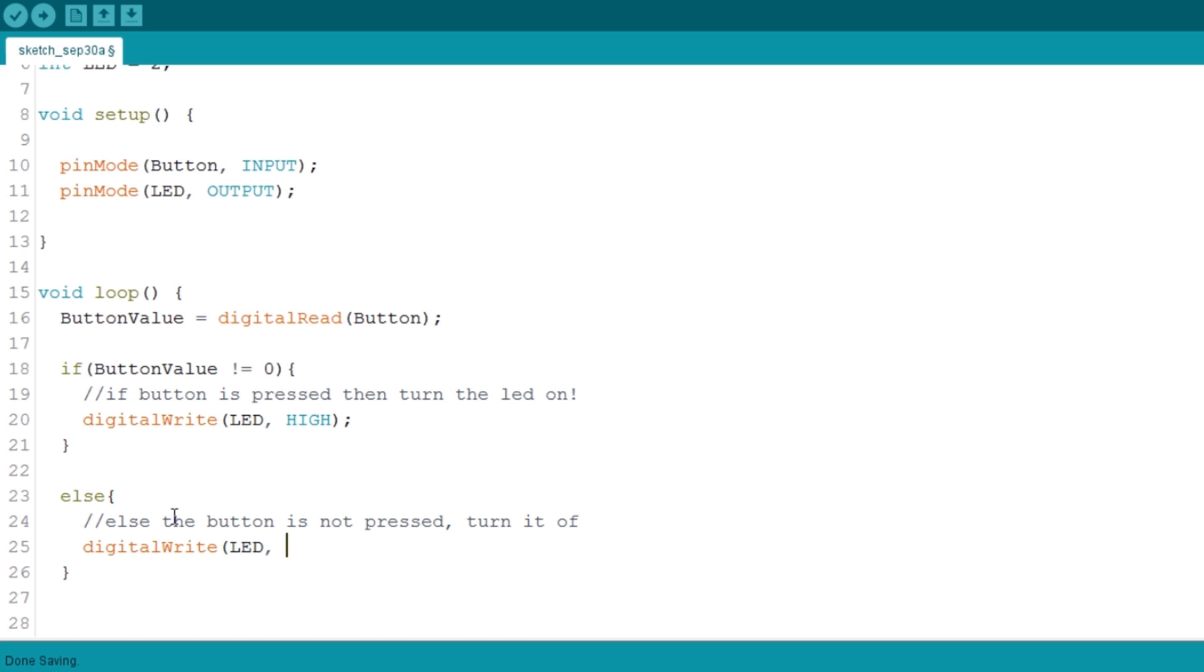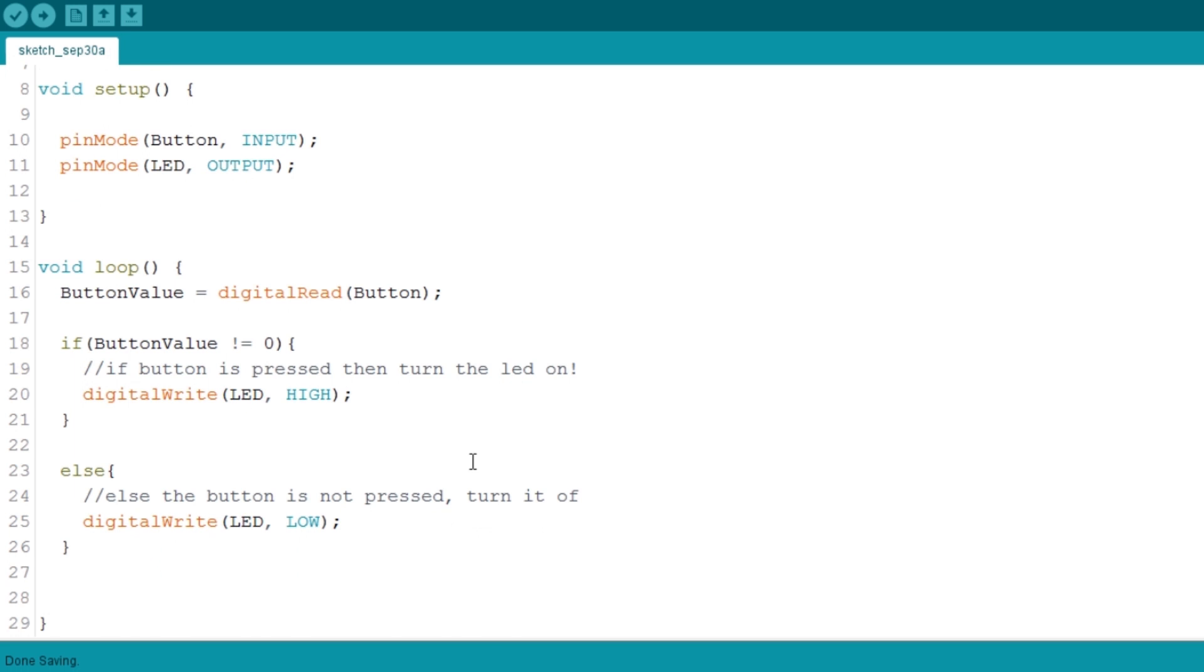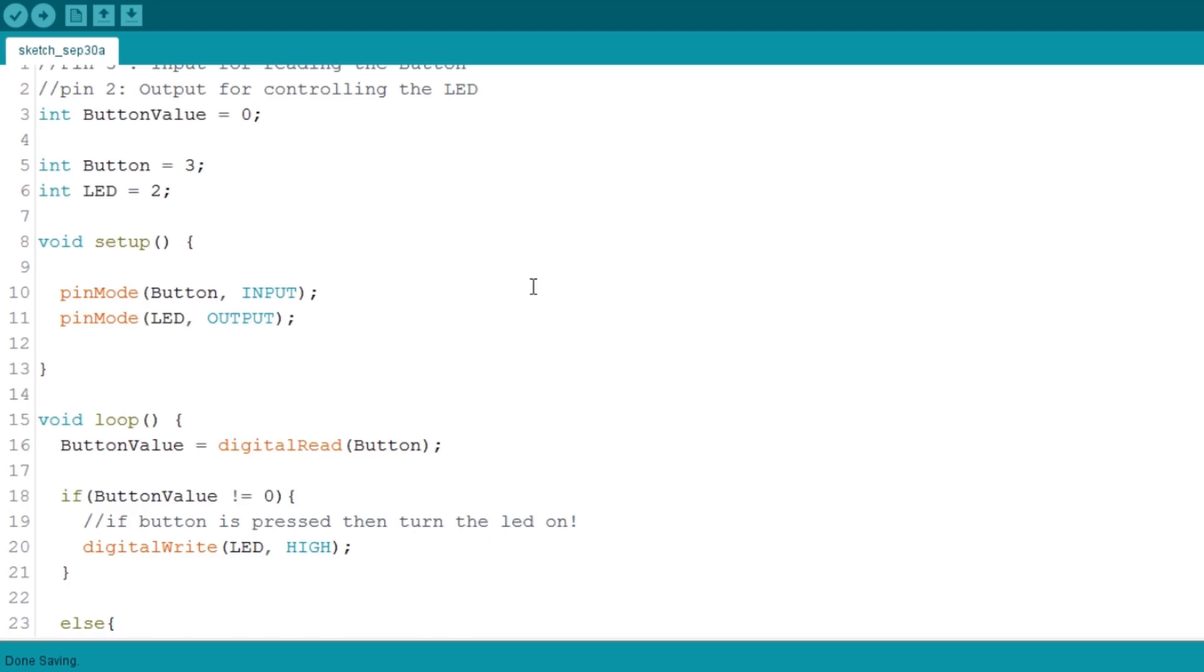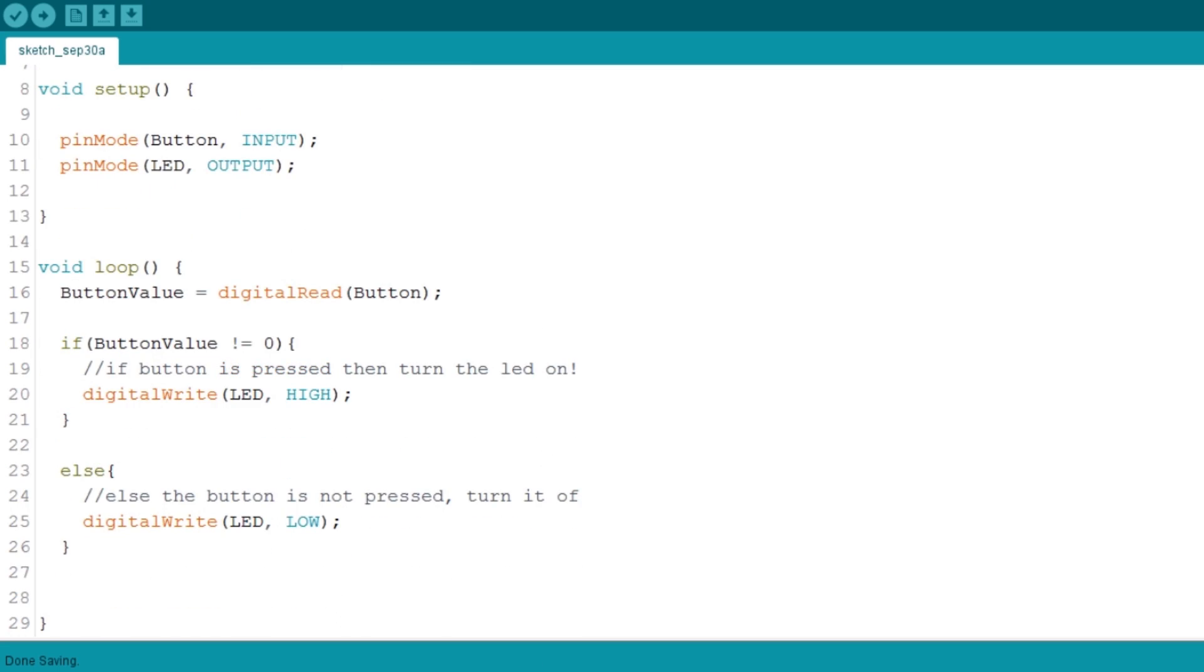Let's assume the LED is already off and you turn it off again. Don't worry, that's no problem as nothing will happen. The code is done. The only thing left to do is to actually send it to the Arduino.